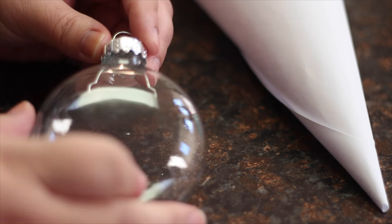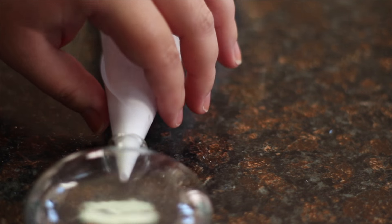Start by removing the top from your ornament. Then roll a piece of paper into a funnel and decide if you need to widen the tip. If you do, go ahead and cut it.